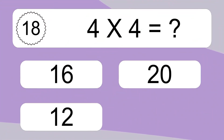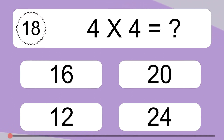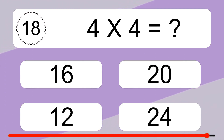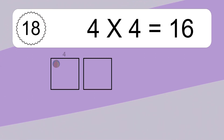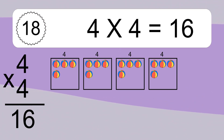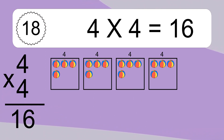4 x 4 equals what? 4 x 4 equals 16. We have 4 boxes, and each box has 4 colorful balls inside. If you count all the balls in all the boxes together, you will have 4 x 4 balls. This equals 16 balls.